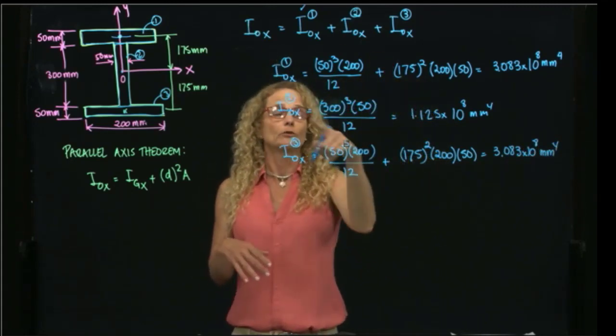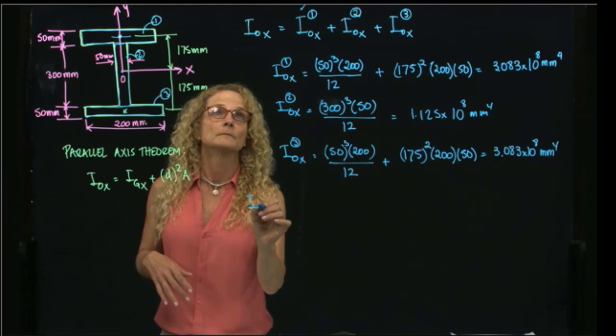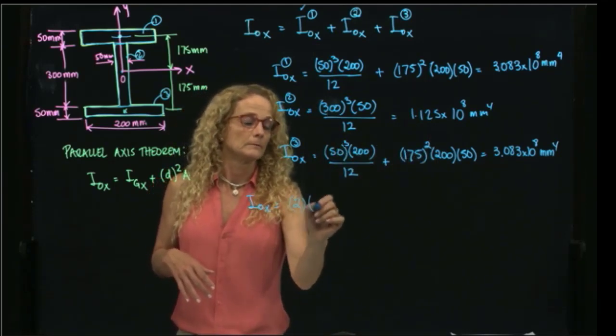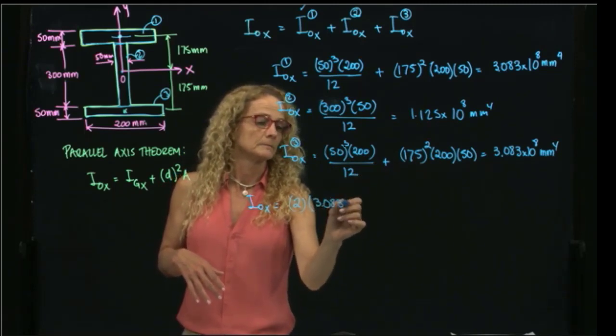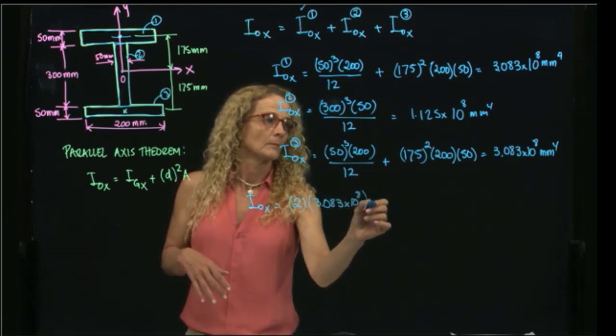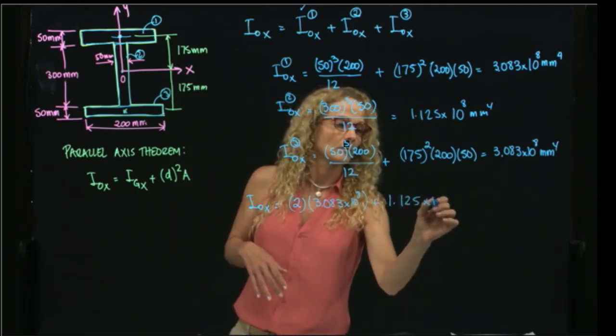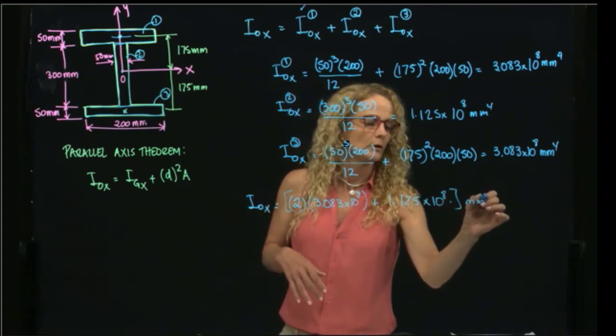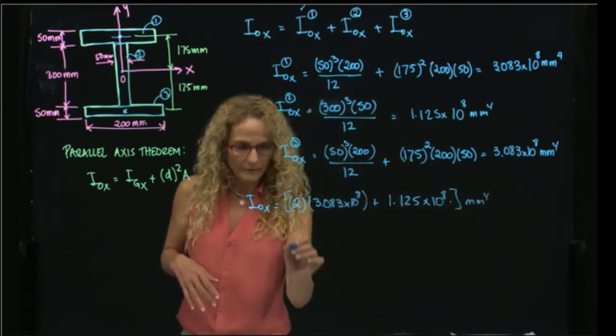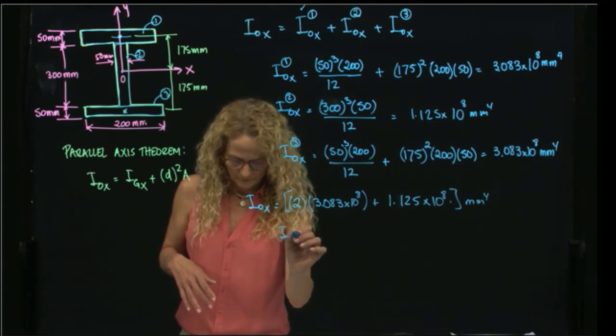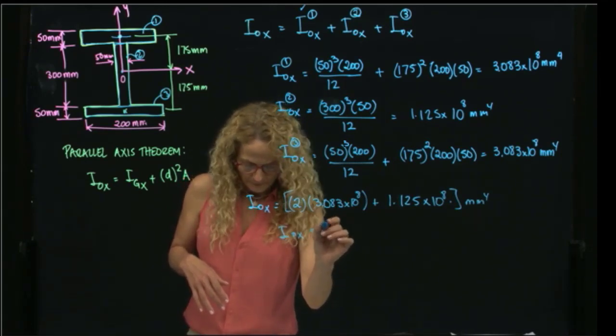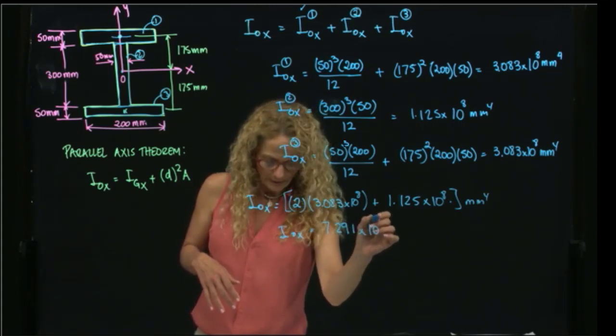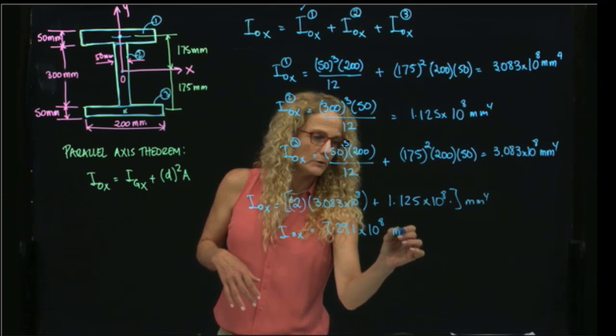So when I add those three together, I will have two times the first value plus the second one, and that all in millimeters to the fourth. And the result is equal to 7.291 times 10 to the 8 millimeters to the fourth.